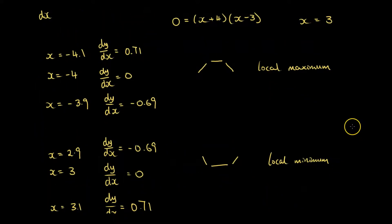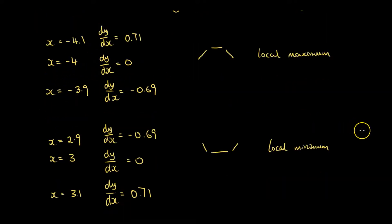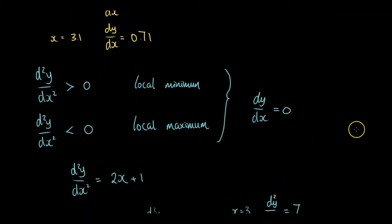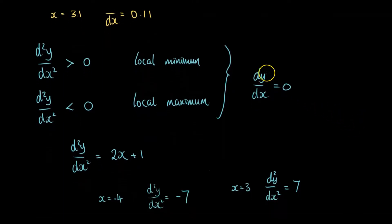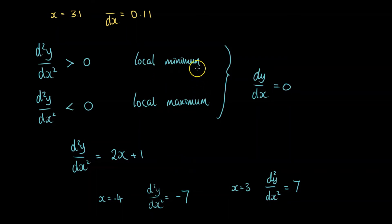So there are two ways to determine local minima and maxima. The first method was testing either side of the point. The second method was putting the x value into the second derivative — differentiating the original equation twice, putting the x value in, and checking whether the result is bigger or smaller than 0. That tells you whether it's a local minimum or a local maximum.